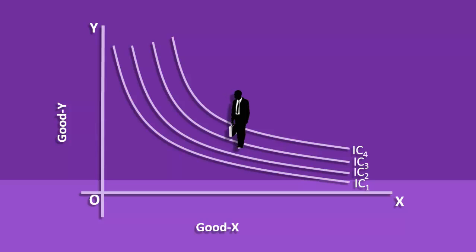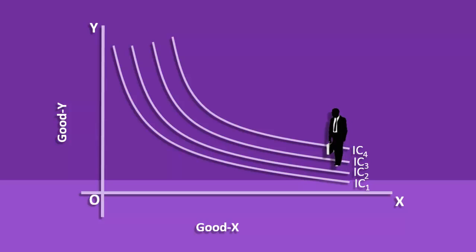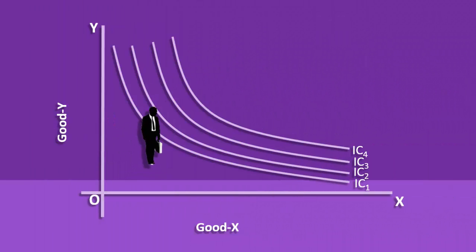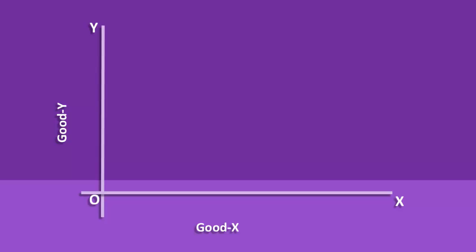The consumer is indifferent among combinations within an Indifference Curve, but not between combinations on two different Indifference Curves. As the consumer is assumed to behave rationally, he wants to reach the highest possible Indifference Curve. His aim is to maximize his utility, but he is constrained by his income and the prices of goods X and Y.